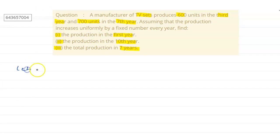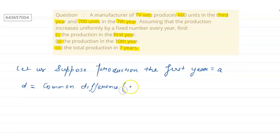Let us suppose production in the first year be equals to a and suppose d is a common difference, that is the uniform increase in the number of units of TV sets.